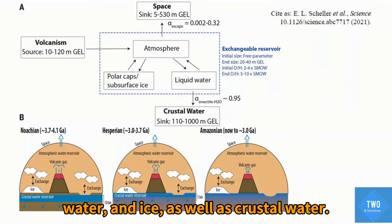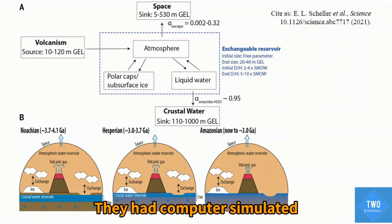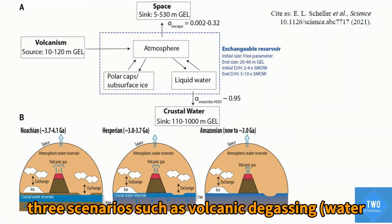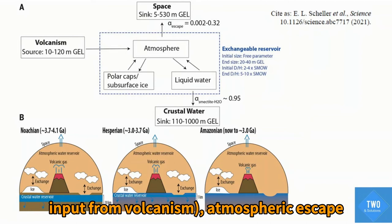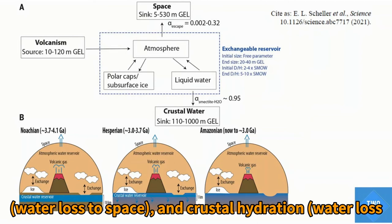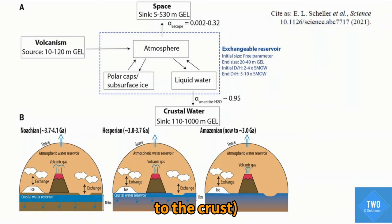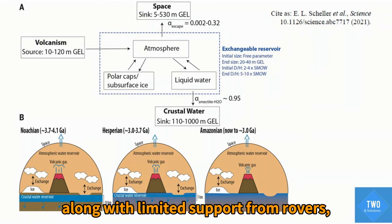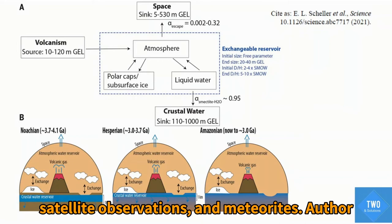They have computer-simulated three scenarios such as volcanic degassing, water input from volcanism, atmospheric escape, water loss to space, and crustal hydration, water loss to crust on Mars, along with limited support from rovers, satellite observation, and meteorite data.